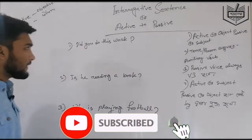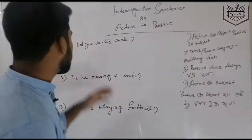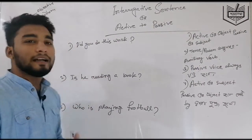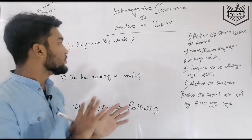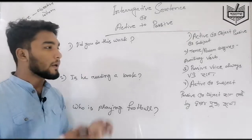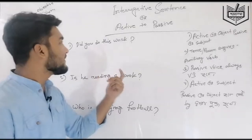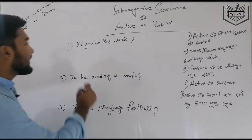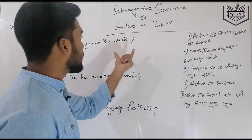So to summarize the active to passive rules. Now I'm going to write interrogative sentences. Let's take our first example. You should practice forming these yourself. Let me do a calculation and then present the example. So the interrogative sentence is: 'Did you do this work?'